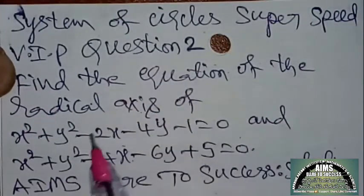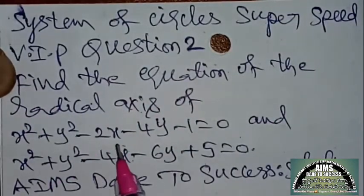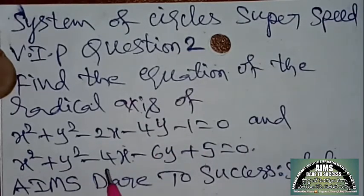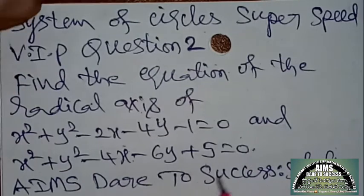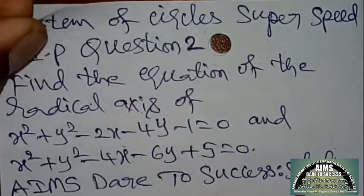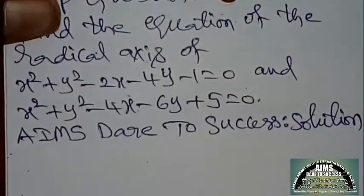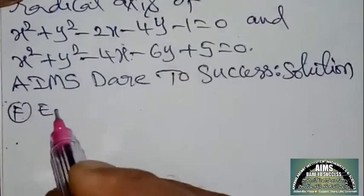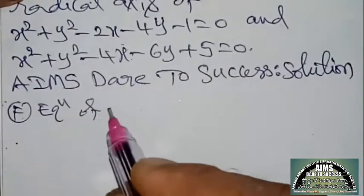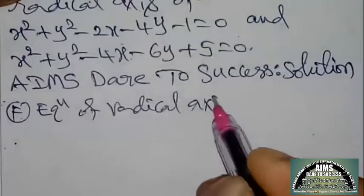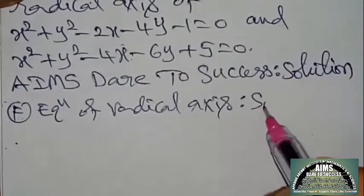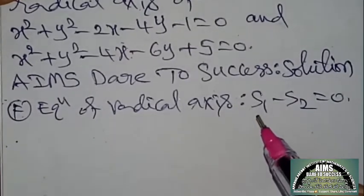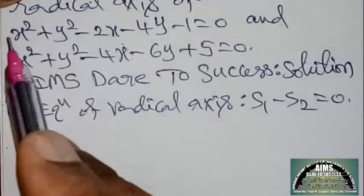Next question: find the equation of the radical axis of x² + y² − 2x − 4y − 1 = 0 and x² + y² − 4x − 6y + 5 = 0. AIMS Dare to Success solution. The formula is: equation of radical axis with two circles is S1 − S2 = 0.